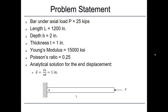The bar has a length of 1200 inches, a depth of 2 inches, and a thickness of 1 inch. A load P of 25 kips is applied. Young's modulus is 15,000 ksi and Poisson's ratio is 0.25. We can solve this problem analytically using principles of mechanics. The end displacement delta equals PL over AE, which gives us 1 inch. So we expect an end displacement of 1 inch, and we'll see what we get when we model this using plane stress elements.